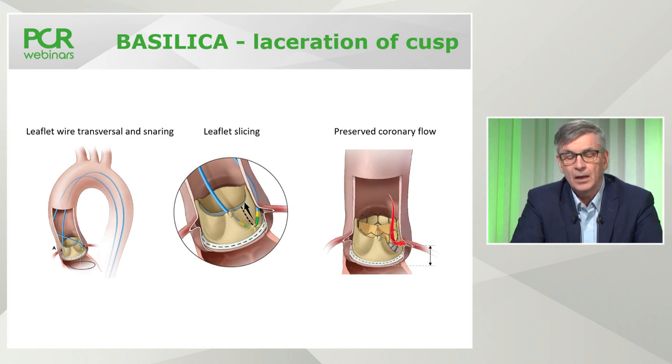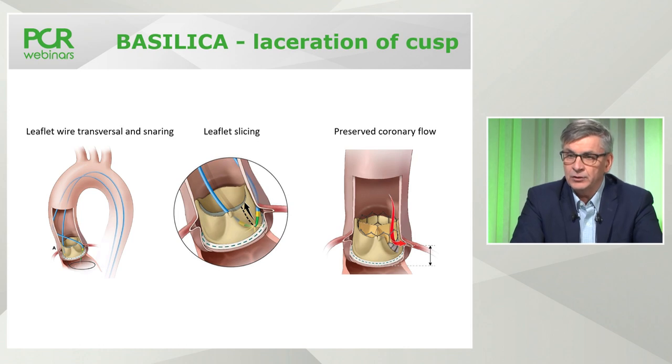To summarize on coronary occlusion: it's very important to review CT scan beforehand to identify high-risk patients. Use coronary protection devices, consider what type of TAVI valve to use to minimize risk, and be prepared to treat occlusion if it occurs. Now let's move to the final topic: accessing the coronary arteries after a TAVI procedure — tips, tricks, and techniques.